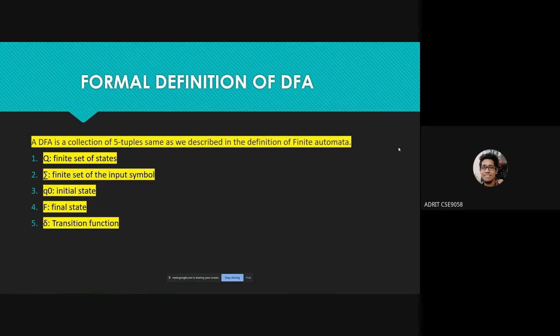DFA is a collection of five tuples as described in the definition of finite automata. These are as follows: Q, which is the finite set of states; Sigma, which is the finite set of input symbols; Q0, which is the initial state; F, which is the final state; and Delta, which is the transition function.